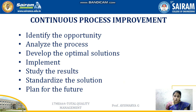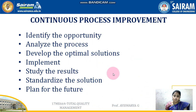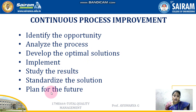The next topic we are moving to is continuous process improvement. We have seen all the tools for checking the problems. Once we have checked all the problems, there is a continuous process we need to follow for improving the issues. This is like making a corrective action. The steps involved in continuous process improvement are: identifying the opportunity, analyzing the process, developing the optimal solution, implementing it, studying the results, standardizing the solution, and planning for the future.